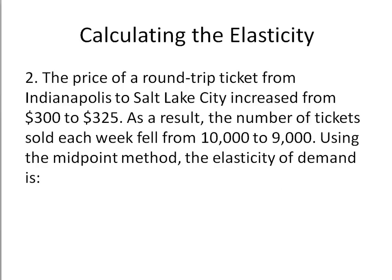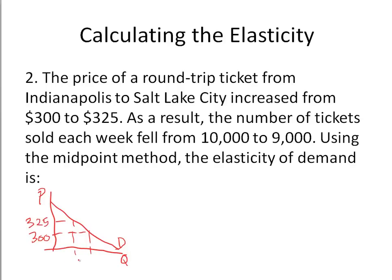The price of a round trip ticket between Indianapolis and Salt Lake City increased from $300 to $325. So let's graph this. When you do the elasticity of demand, you're looking at changes in price along a demand curve. In our case, we're starting at $300 and going up to $325. At $300 we had 10,000 passengers, going down to 9,000. So we start at point A and go up to point B. The question asks us to use arc elasticity.